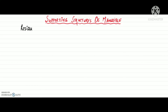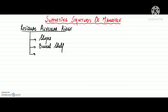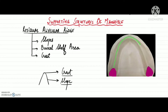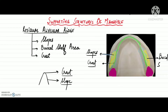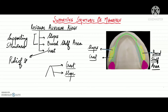Now let's talk about the supporting structures of the mandible. The residual alveolar ridge consists of three parts: the slopes of the residual alveolar ridge, the buccal shelf area, and the crest of the alveolar ridge, as we can see in this diagram. The green highlighted part represents the crest of the alveolar ridge, the blue slanting lines represent the slopes of the residual alveolar ridge, and the yellow highlighted area represents the buccal shelf area. The slopes of the residual ridge and the buccal shelf area act as supporting structures, while the crest of the residual ridge is mostly a relief area that needs to be relieved under the denture.